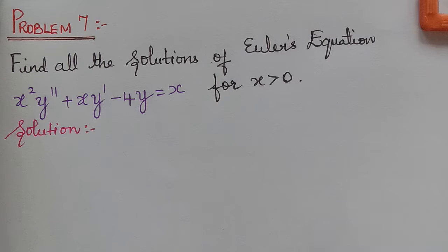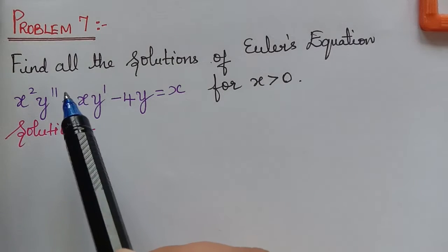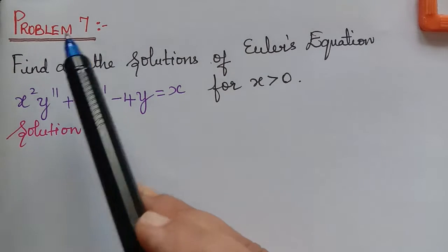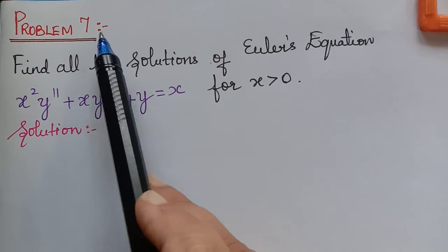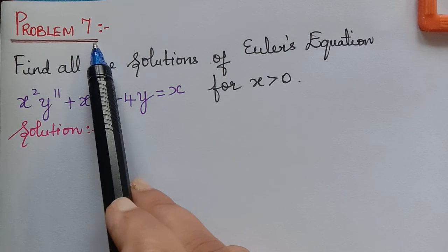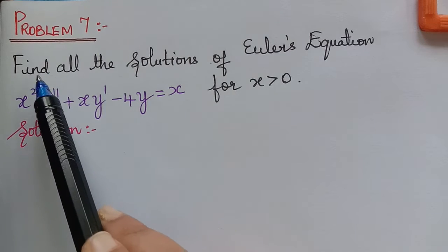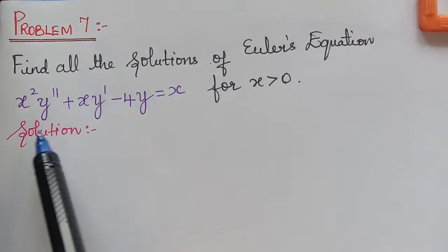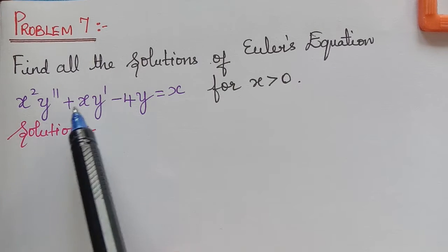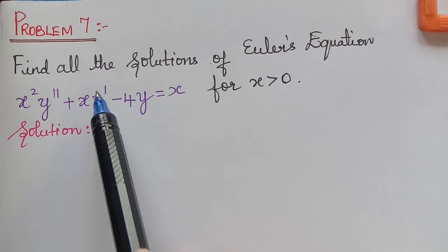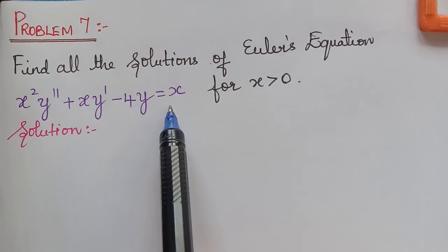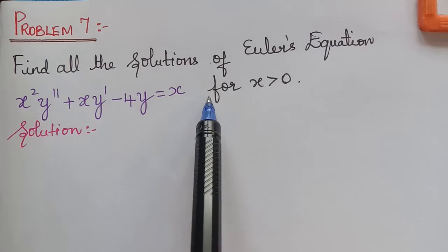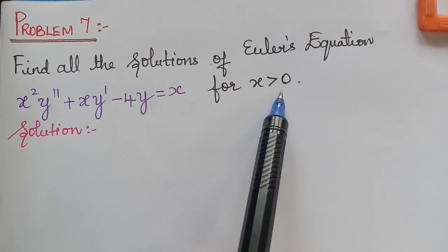Hello students. Under the topic Euler's equation, here we have problem number 7. Kindly follow the previous lectures for problems 1 to 6. Find all the solutions of the Euler's equation x squared y double dash plus x y dash minus 4y equals x, for x greater than 0.